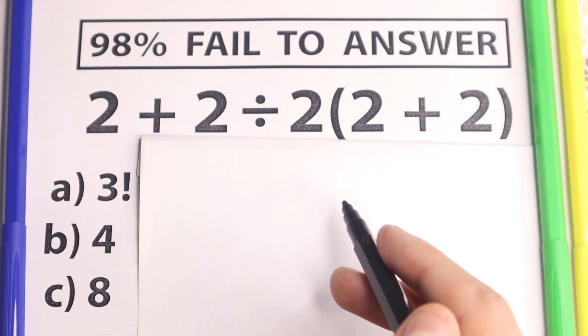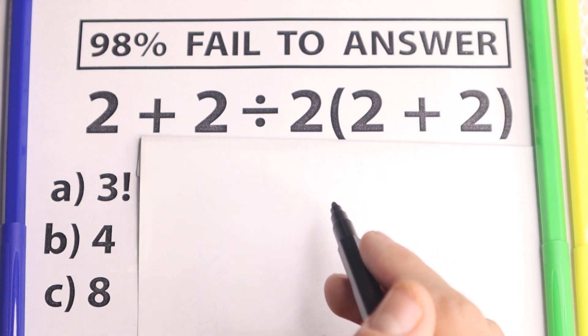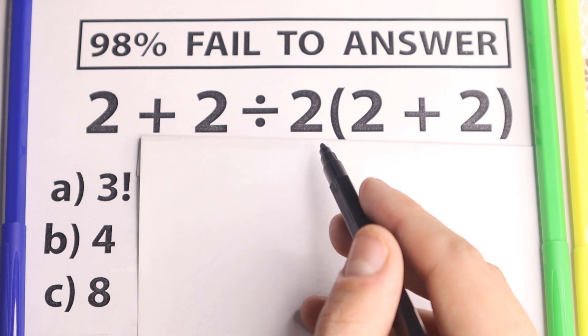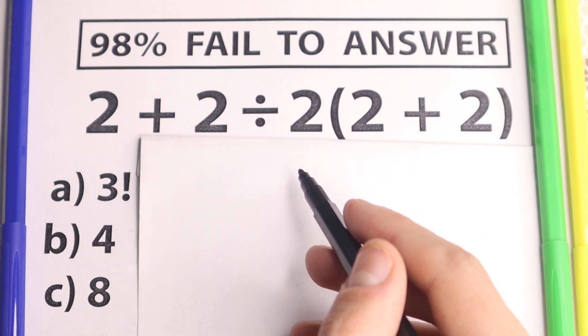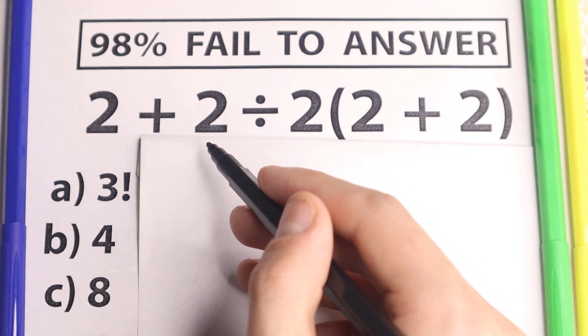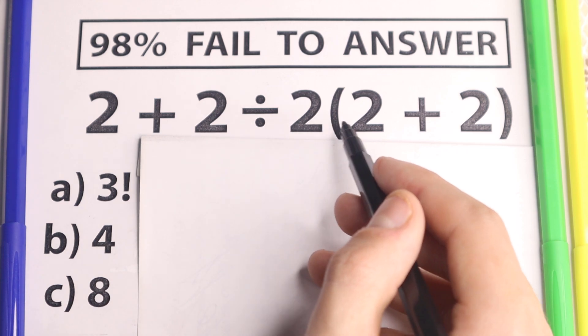So go ahead and put your answer into the comment section and I'm going to show you here the correct answer in just one minute and we will check our answer, it will be really interesting and really tricky. So here is the problem, 2 + 2 ÷ 2 × (2 + 2).